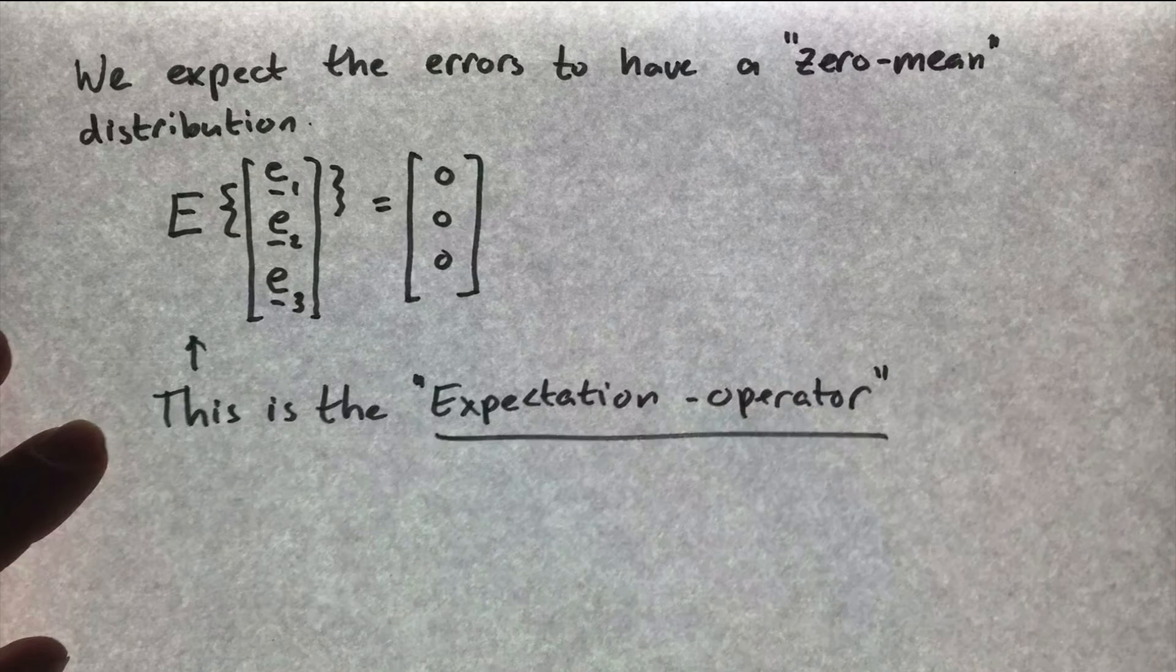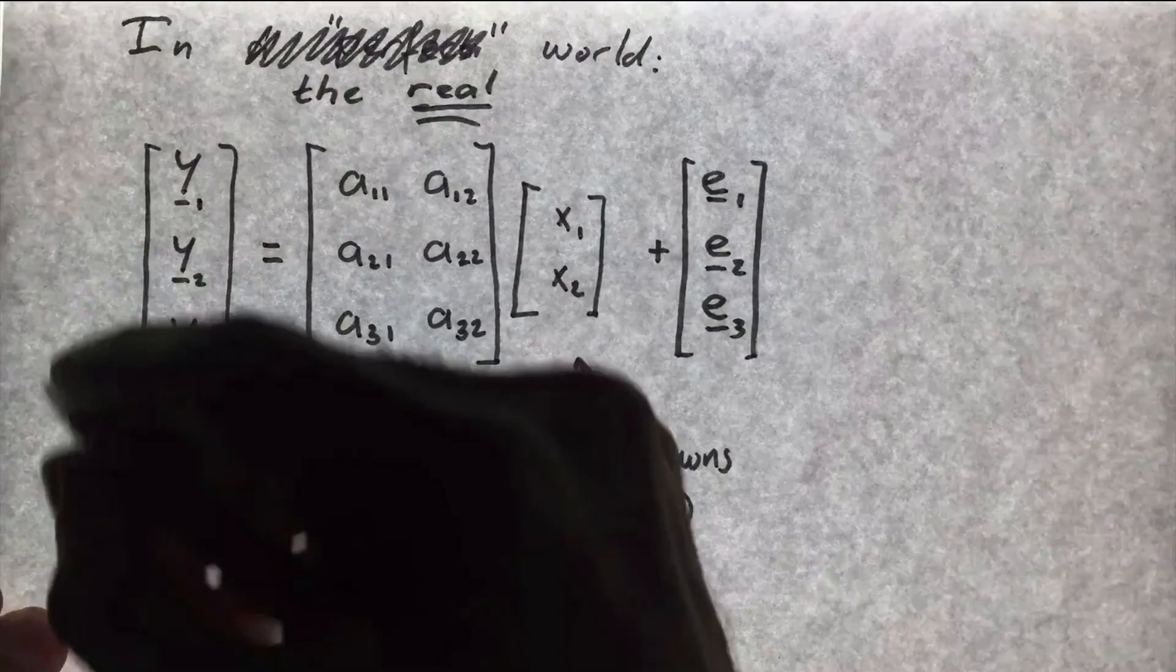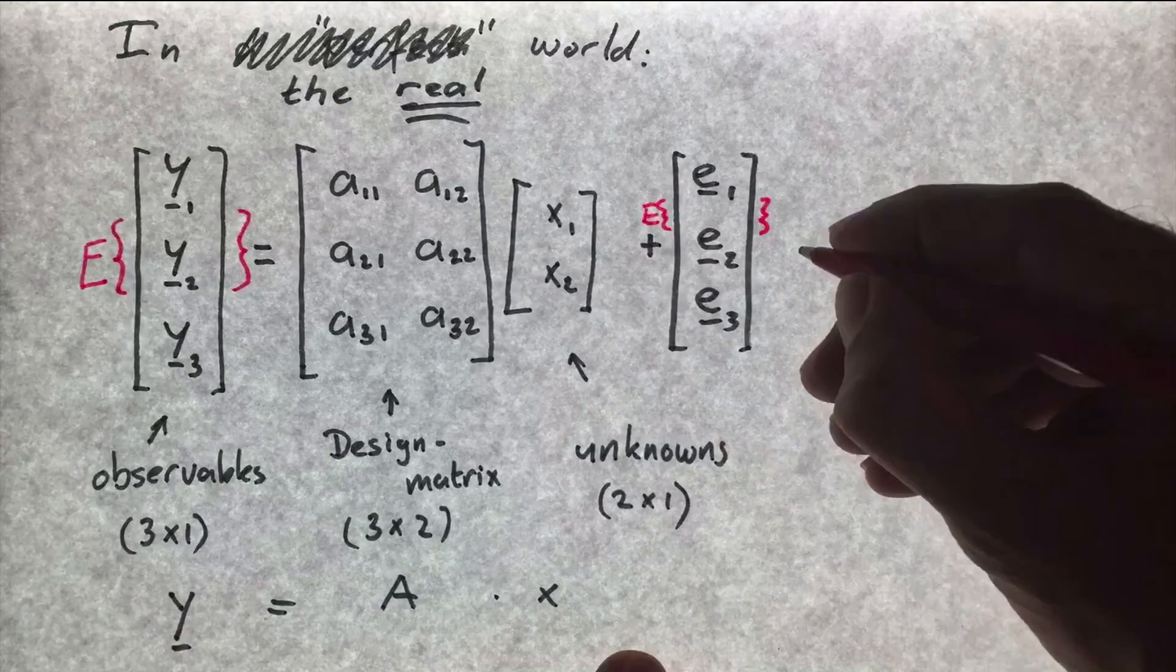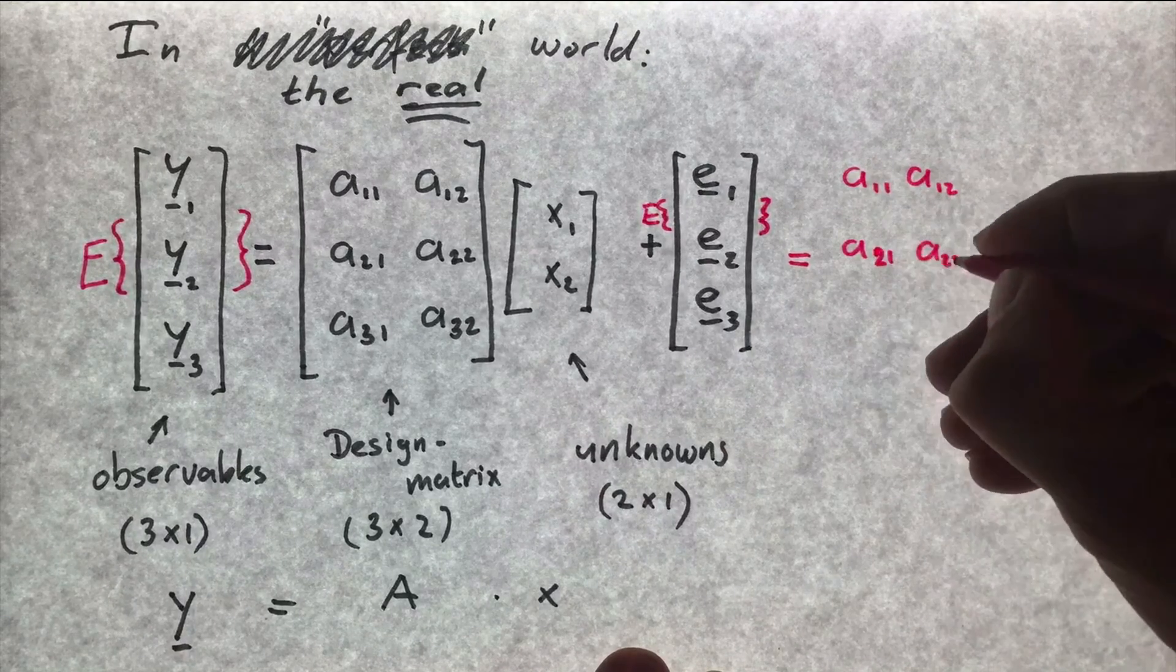If we can write the expectation of the errors in this way, it is easy to find an equivalent expression for the expectation of the observables. Let's have a look. If we use the expectation operator on the left hand side of the equation, we should use it on the right hand side as well.